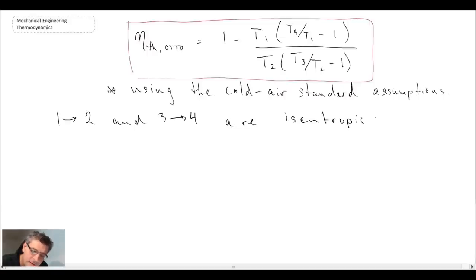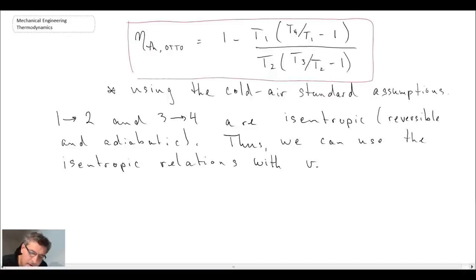And if you recall, processes one to two and three to four were isentropic. And if you recall the definition of isentropic, that means reversible and adiabatic. So what we can do is use relationships that we have for isentropic processes. And we saw these in an earlier lecture. And we will use this with V2 equals V3, that's for the heat addition process, and that would be at top dead center. And then for the exhaust process, V4 equals V1, and that was at bottom dead center. And so with that, our isentropic relations would state the following.